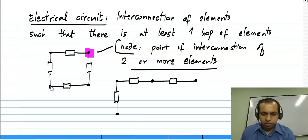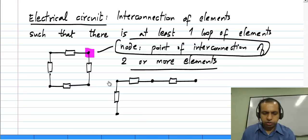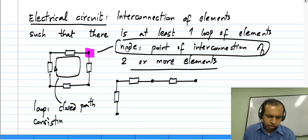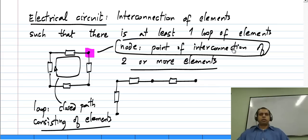The node is a point of interconnection of two or more elements, and loop is a closed path consisting of elements. These are all important concepts when we later go to analysis of circuits.